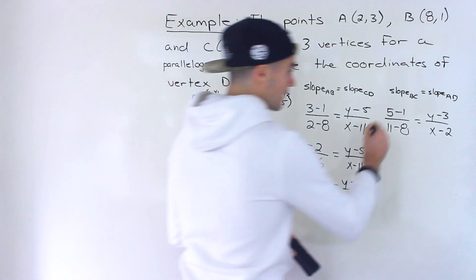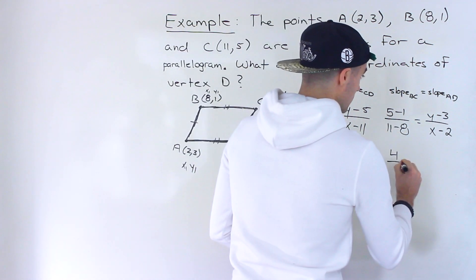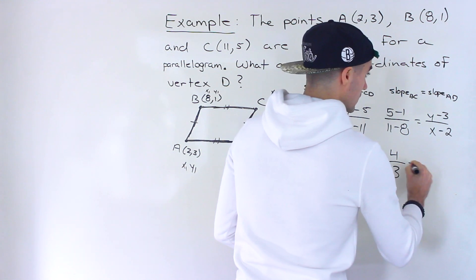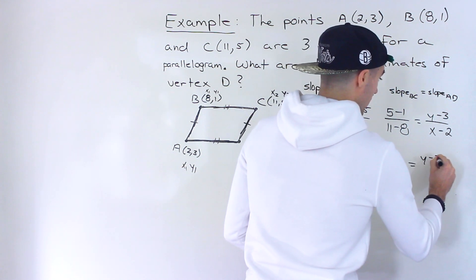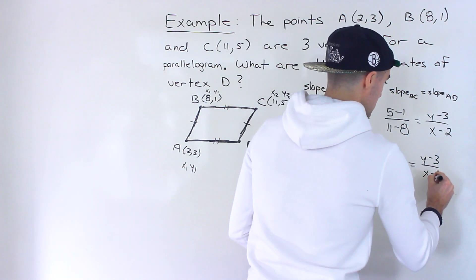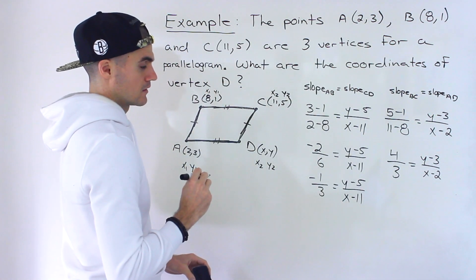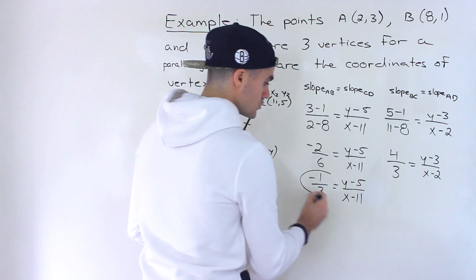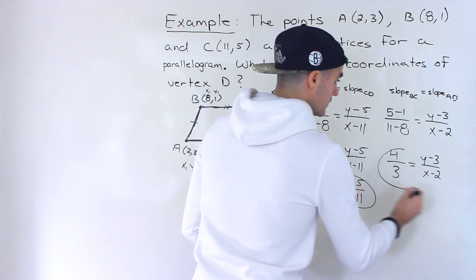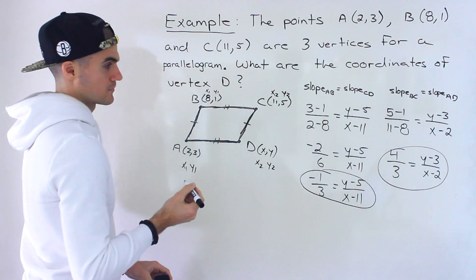Now from here, 5 minus 1, 4, 11 minus 8, 3. That's equal to Y minus 3 over X minus 2, like that. Okay, so now we got two simplified equations to solve.